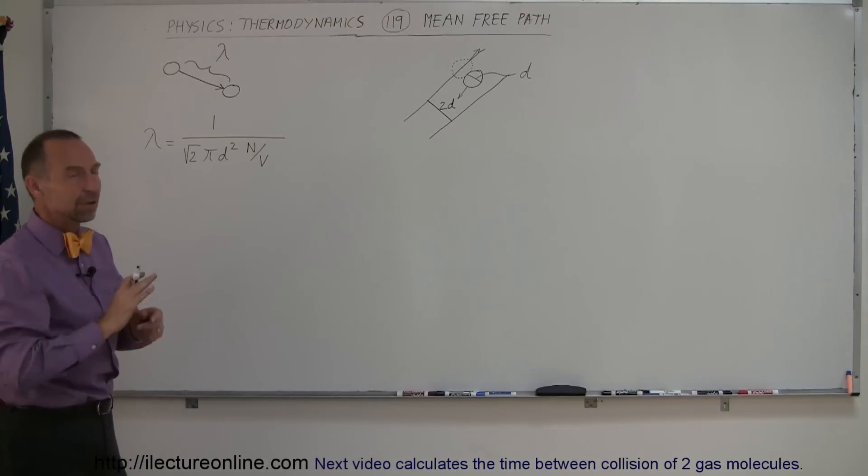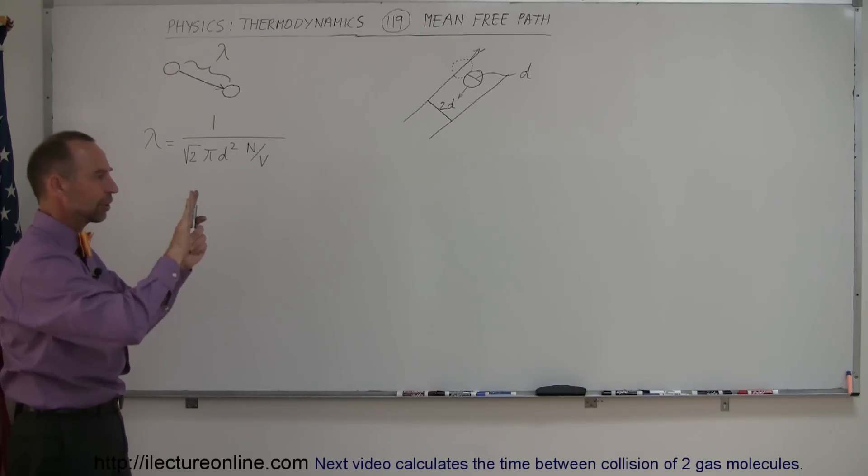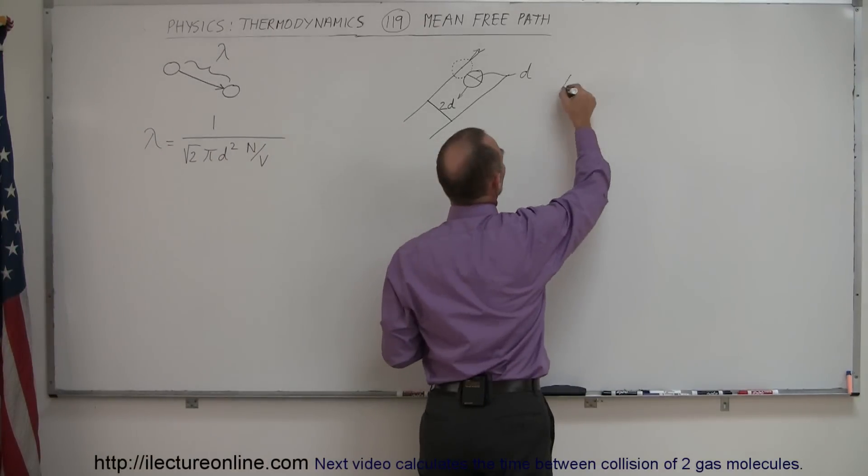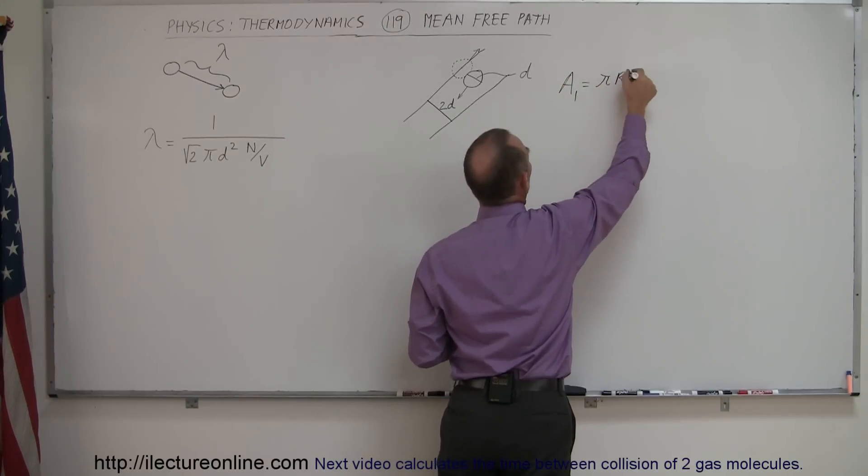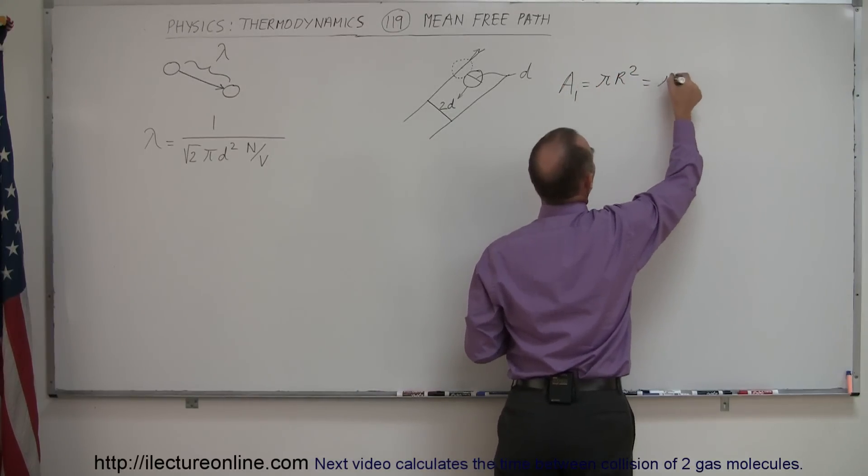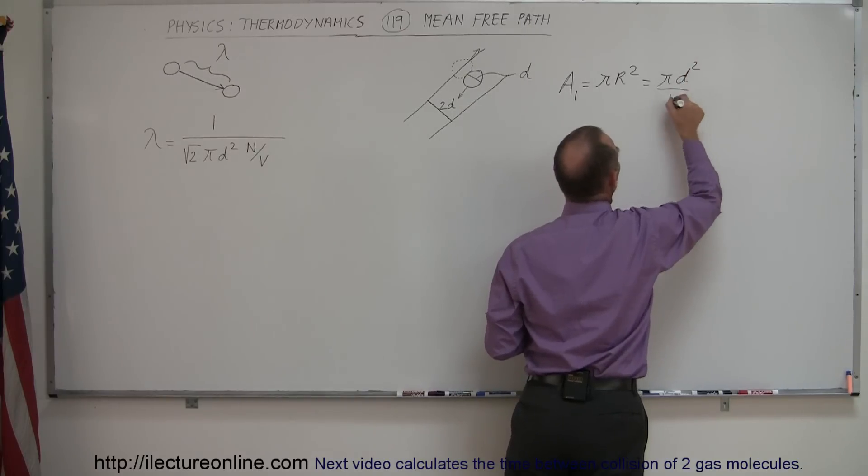So the cross-sectional area if you think, or not the surface but the cross-sectional area of a molecule, if you cut a molecule in half and you look at the cross-sectional area, the area of a single molecule is equal to π r squared which is equal to π d squared over 4.